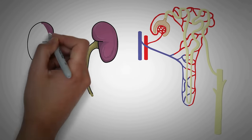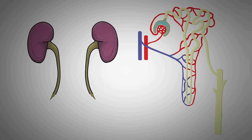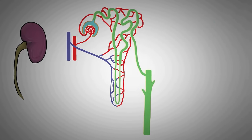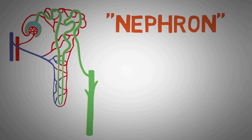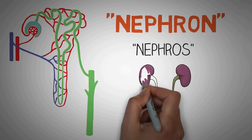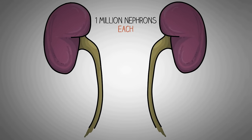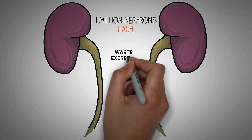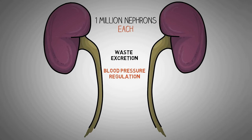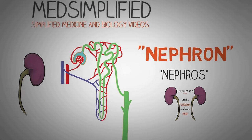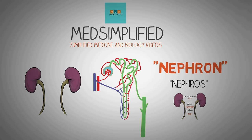The nephron is the basic functional unit of the kidneys that consists of a renal corpuscle and the tubule attached to it. The word nephron is derived from the Greek word nephros meaning kidney. Each kidney contains approximately 1 million nephrons which perform several important functions including waste excretion, maintaining the body's pH, regulation of blood pressure, and several other functions.